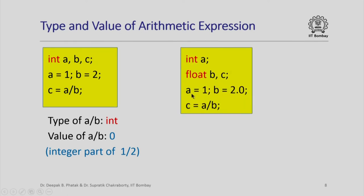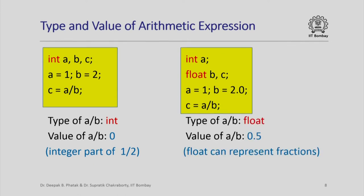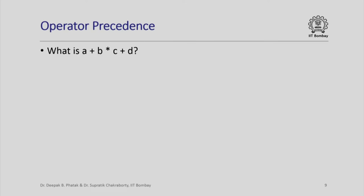On the other hand, consider this program where A is integer, B and C are float. A is assigned 1 and B is assigned 2.0. When we compute A divided by B, one operand is float, so the type of this expression is float, and therefore the value of C can be 0.5 because float can represent fractions.